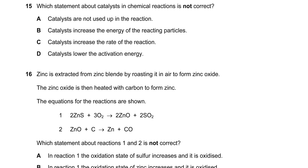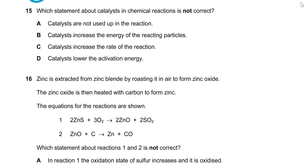In question 15, which statement about a catalyst in a chemical reaction is not correct? Catalysts aren't used up in the reaction — correct. Catalysts increase the energy of the reacting particles — no, they only lower the activation energy, they don't increase particle energy — this is totally wrong. Catalysts increase the rate of reaction — correct. Catalysts lower the activation energy — correct. The not correct statement is B.